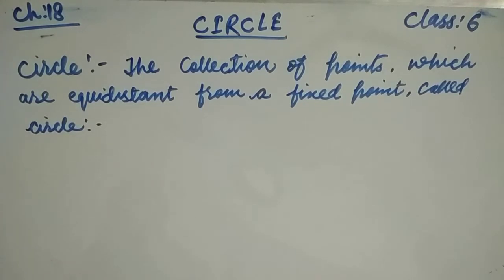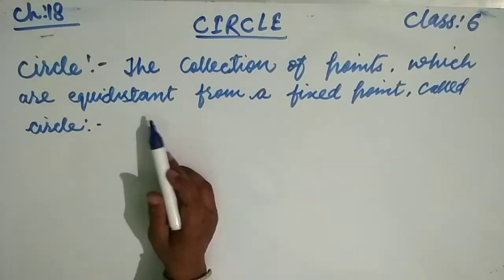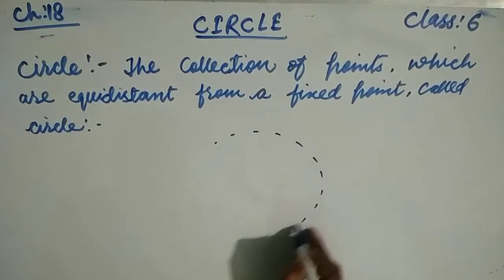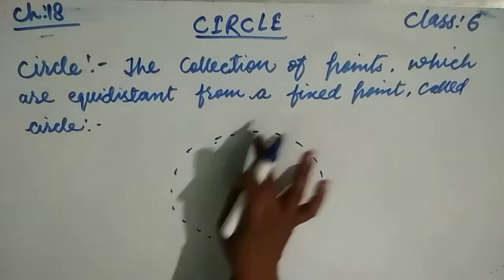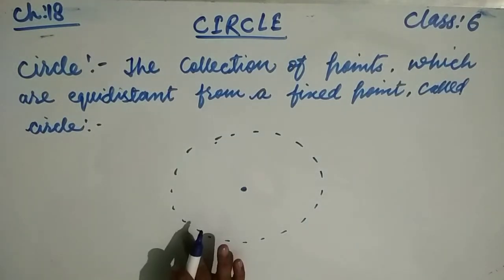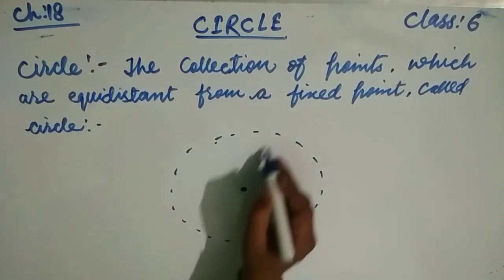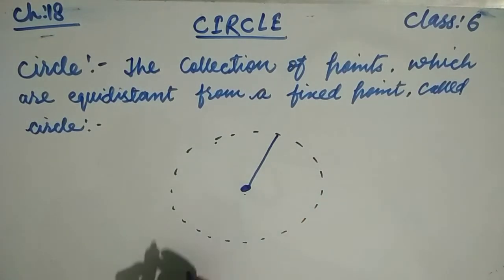The circle is the collection of points which are equidistant from a fixed point. This is the collection of points which are equidistant from a fixed point. This fixed point is the center, and all these points are at equal distance from that fixed point.